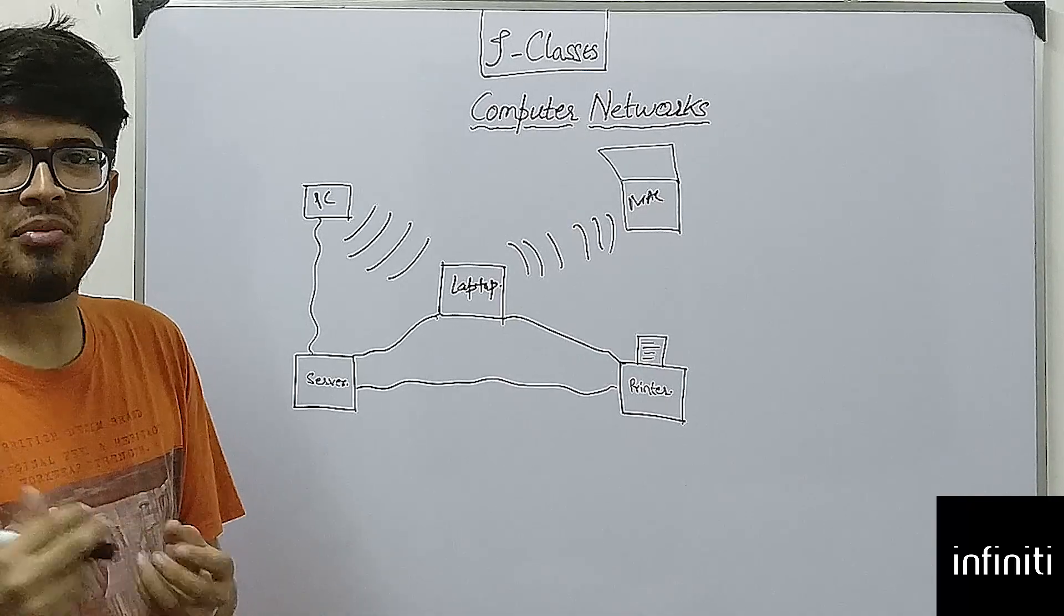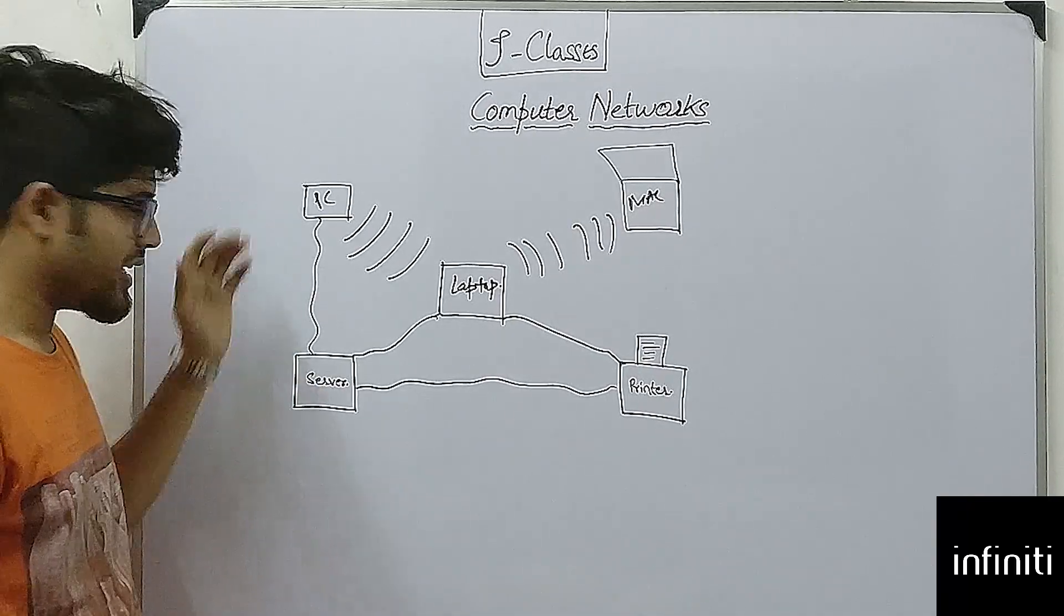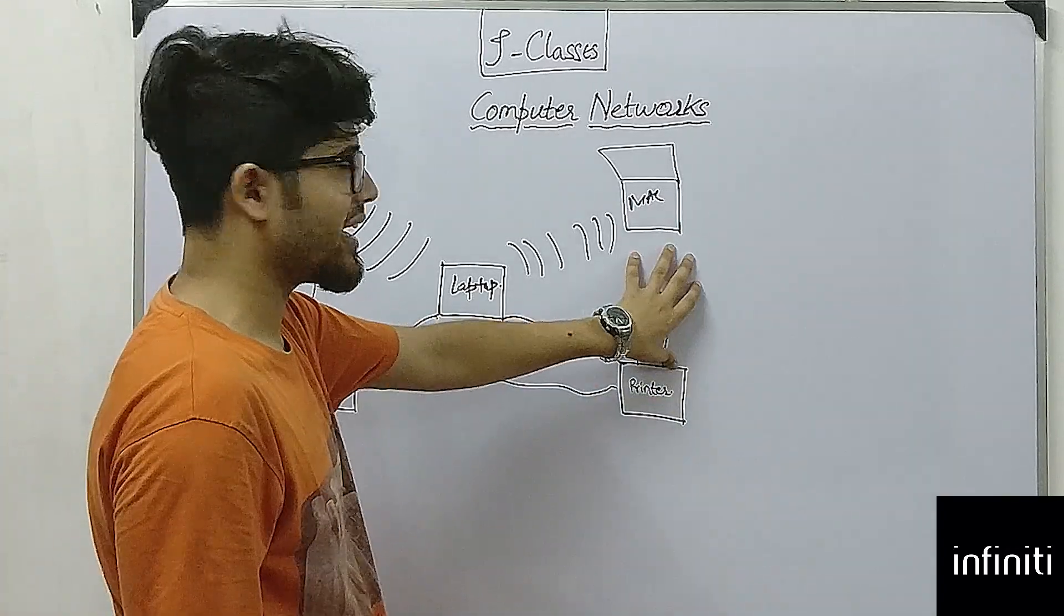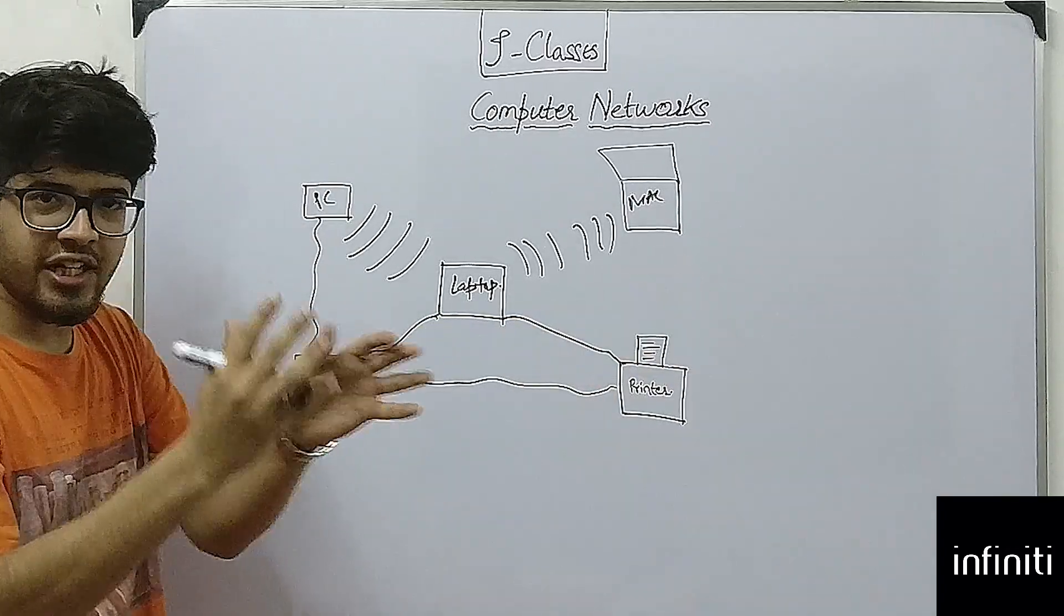Those nodes can be anything. Like here we can see it can be a PC, it can be a server, it can be a laptop, it can be a printer, it can be a Macintosh—it can be any device which is connected in a network.